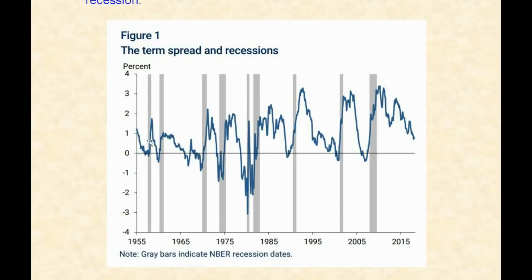It happened here — and right after that, recession. Happened here — recession right after. Here's the exception they were referring to: it happened here, no recession. That was many years ago. But look right after that — it went into negative territory, recession right afterwards. Then negative again, recession. Here's another recession soon after — negative, and recession. The pattern repeats: negative, recession — negative, recession — negative, recession.